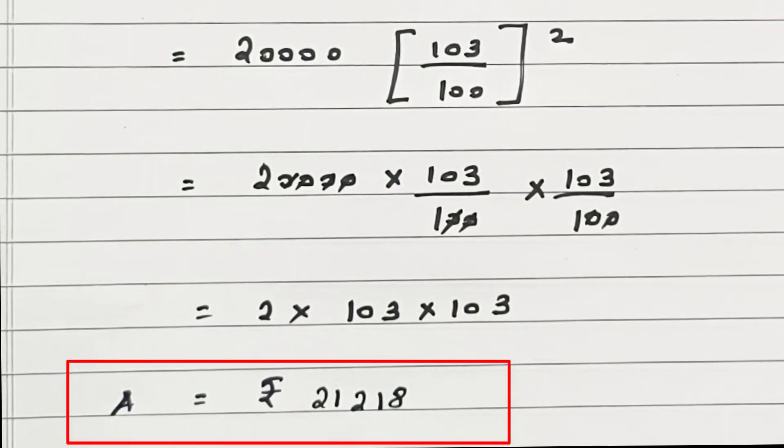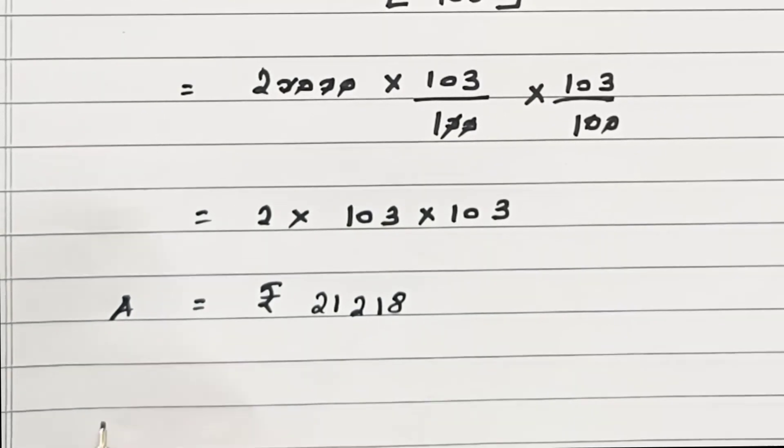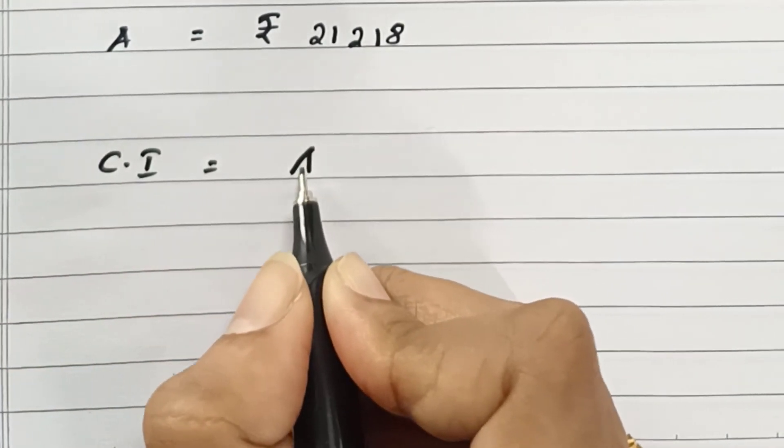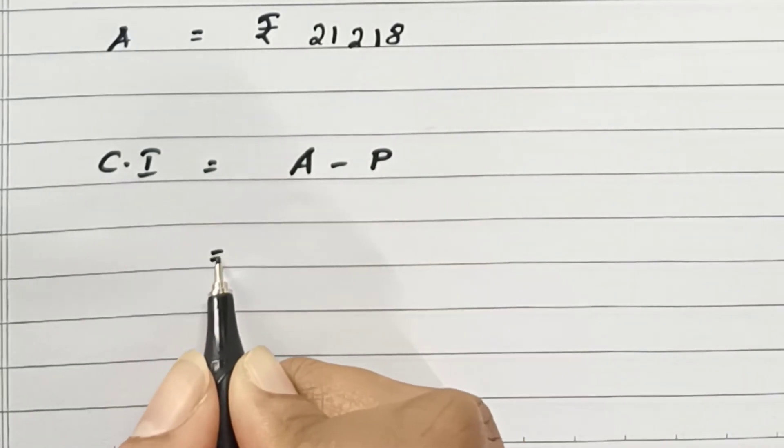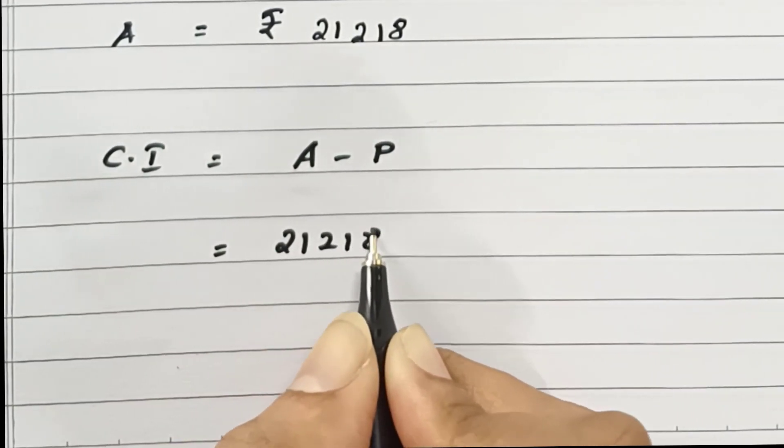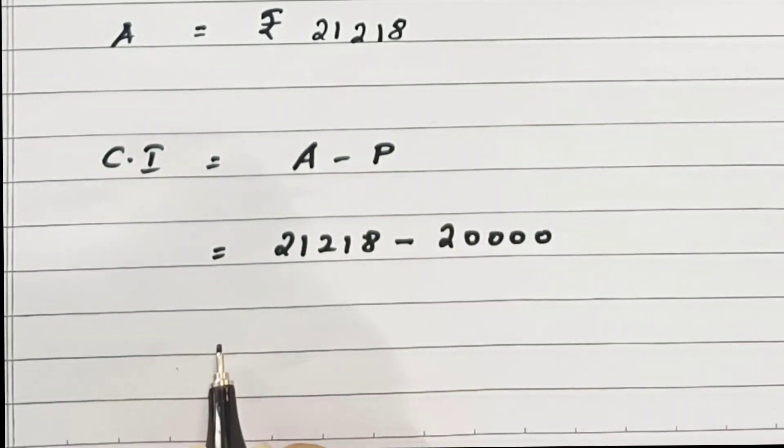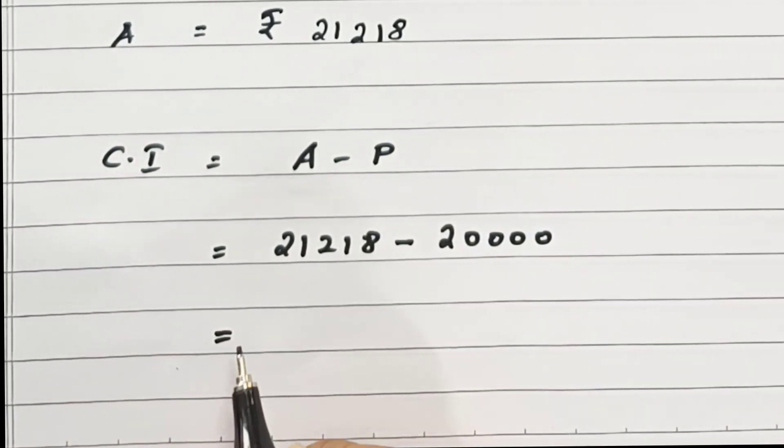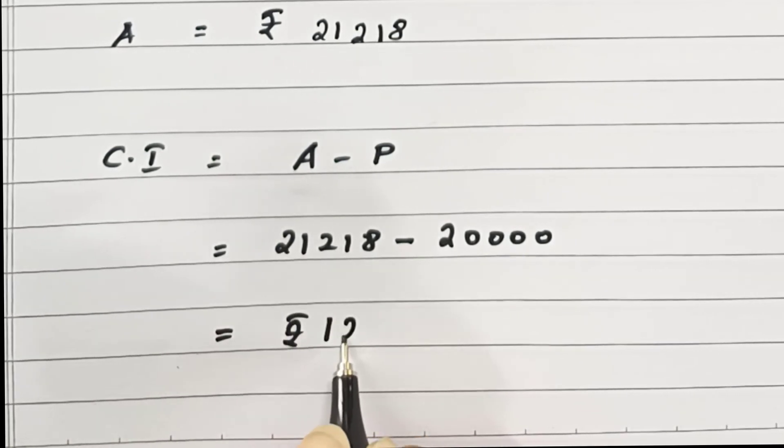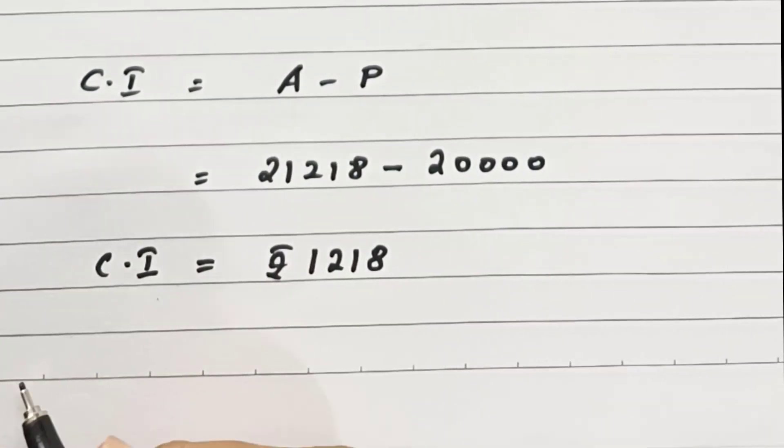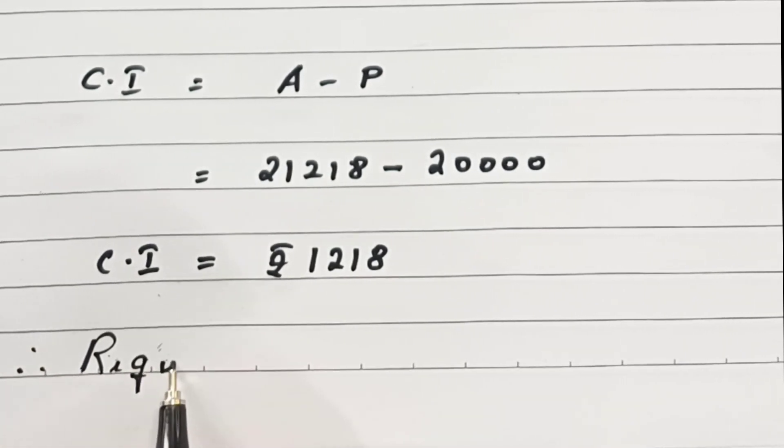To calculate the compound interest, we need to subtract principal from amount. So 21,218 minus 20,000. Upon subtracting, we get ₹1,218. Therefore, the required compound interest is equal to ₹1,218.